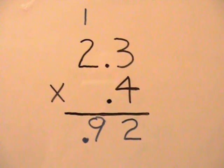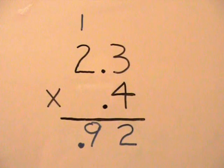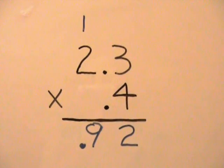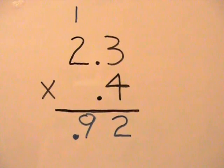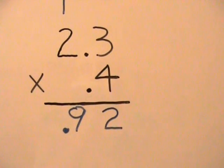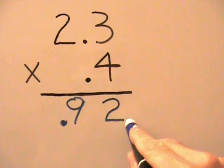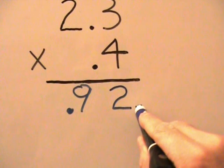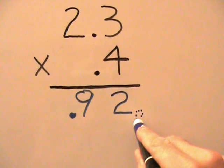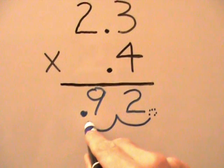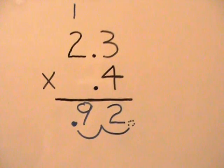Don't forget that to the right of every whole number is a decimal. Sometimes it's invisible and we don't use it, other times we do use it. So when we're moving our decimal in our answer, we're going to start at the right of the ones column where we have our decimal. We move it two places to the left to get our final answer of .92.